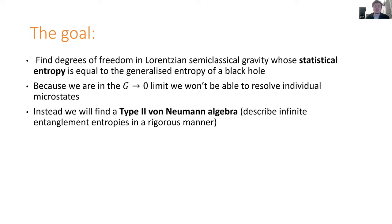I want to be clear about what we're not doing here. We're really going to be in the strict limit of taking the gravitational coupling G to zero. So we're not going to be able to see individual microstates in this formalism, because there's actually going to be infinitely many microstates — A over 4G is going to become infinite in this limit. But what we are going to see is what's called the type two von Neumann algebra. This is just some mathematical formalism that lets us describe infinite entanglement entropies, infinite statistical entropies in a rigorous manner.